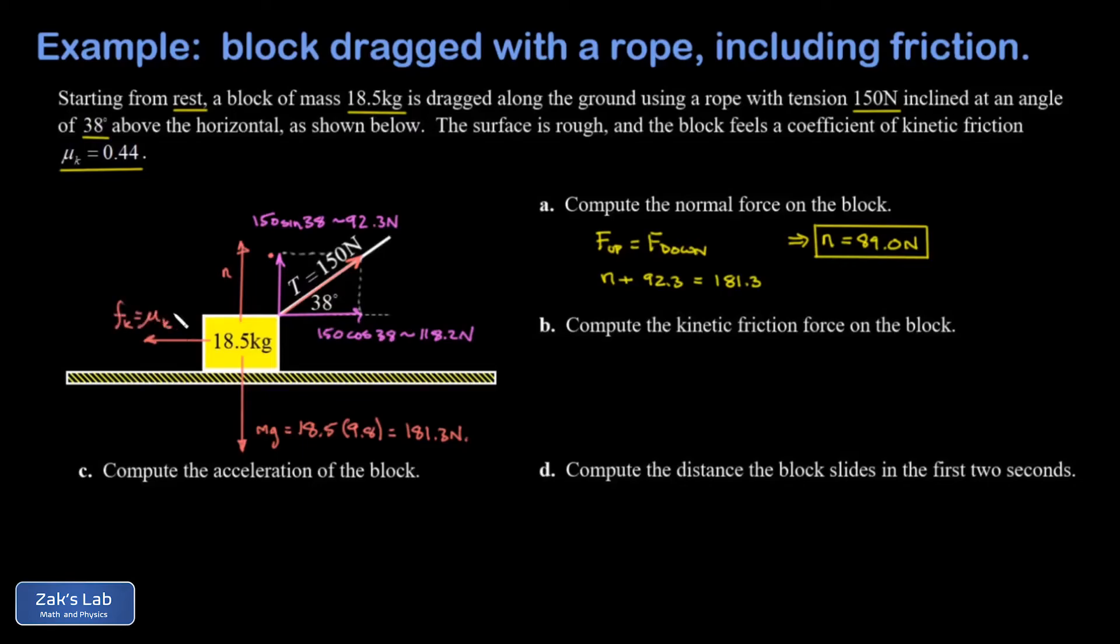Now that I have the normal force, I can very quickly get the magnitude of my friction force. That's mu k times the normal force. I was given mu k in the problem. That's 0.44 and my normal force is 89.0. This gives me a force of about 39.2 newtons.